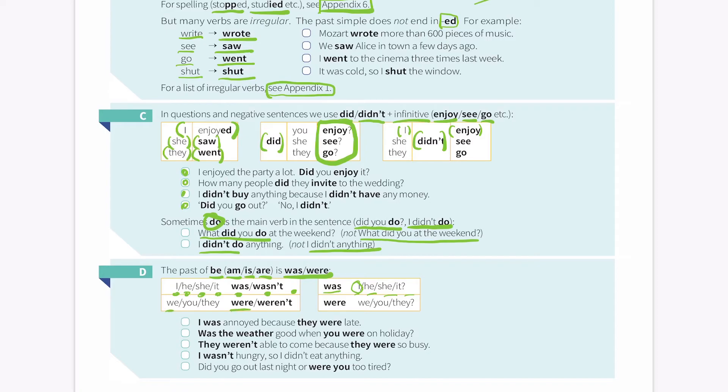So, for were and weren't, you can say we, you and they. We weren't happy. You weren't sad. They were happy. Were you, we and they. Were they angry? Were you happy? So, you can use these for past tense.